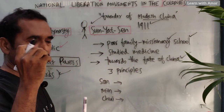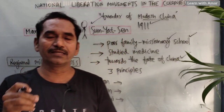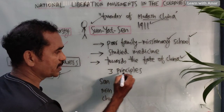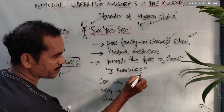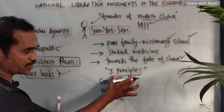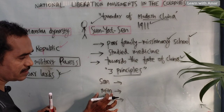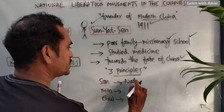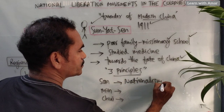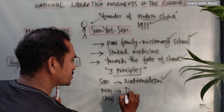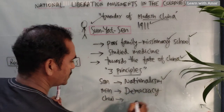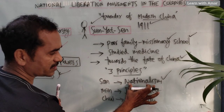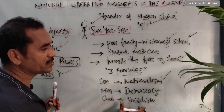He studied the problems of China and designed a program known as the Three Principles, called San Min Chui. The three principles are: Nationalism (San), Democracy (Min), and Socialism (Chui). He wanted to implement all three principles in China so that China would become a developed country.